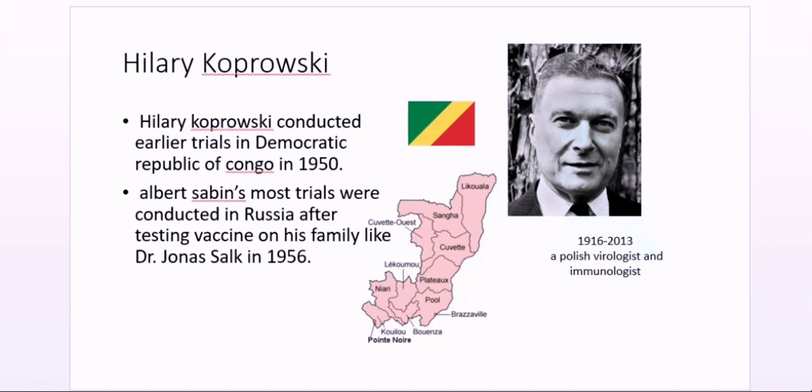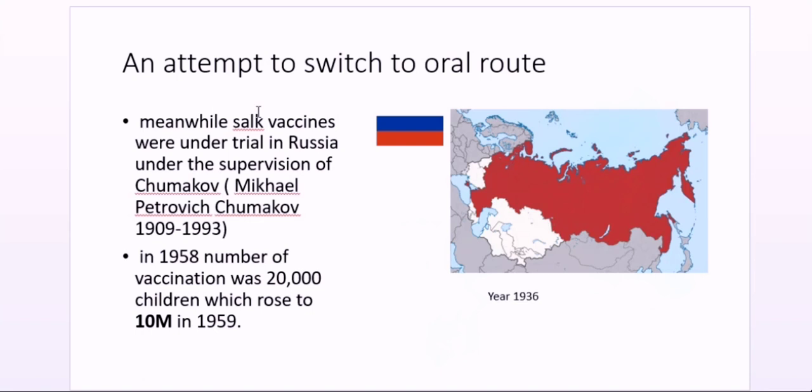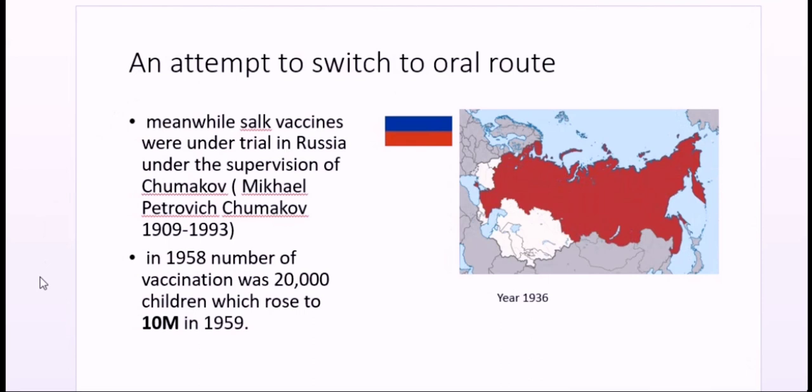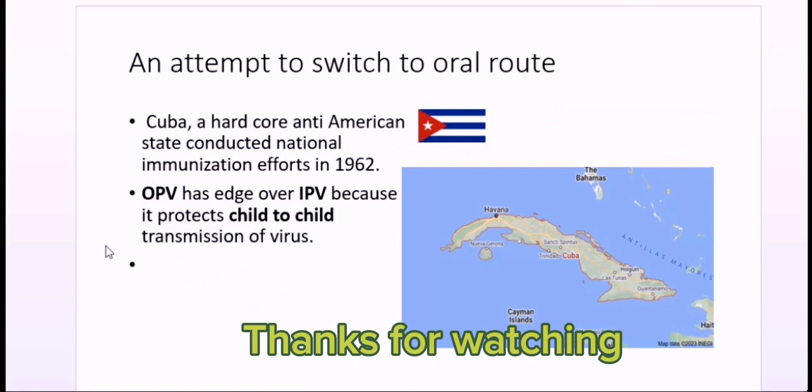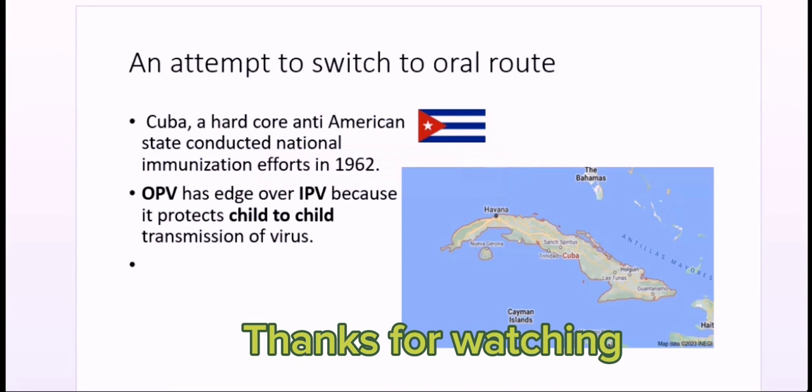Under the supervision of Mikhail Petrovich Chumakov, also a physician, the Russian trials expanded rapidly. In 1958, 20,000 children were vaccinated; within one year, that number rose to 10 million. Cuba, a country with strong anti-American sentiment, conducted its own national immunization campaign in 1962. OPV held an advantage over IPV because it also protects against child-to-child transmission of the poliovirus.